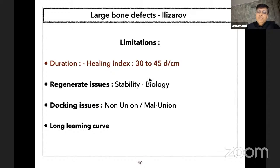One of the most important factors regarding frame duration is the amount of bone gap. This is in contrast to muscular technique, where duration of treatment is independent of size of defect. The healing index on average is 30 to 45 days per centimeter, meaning a patient with an eight centimeter bone gap will require eight to twelve months in frame on average.